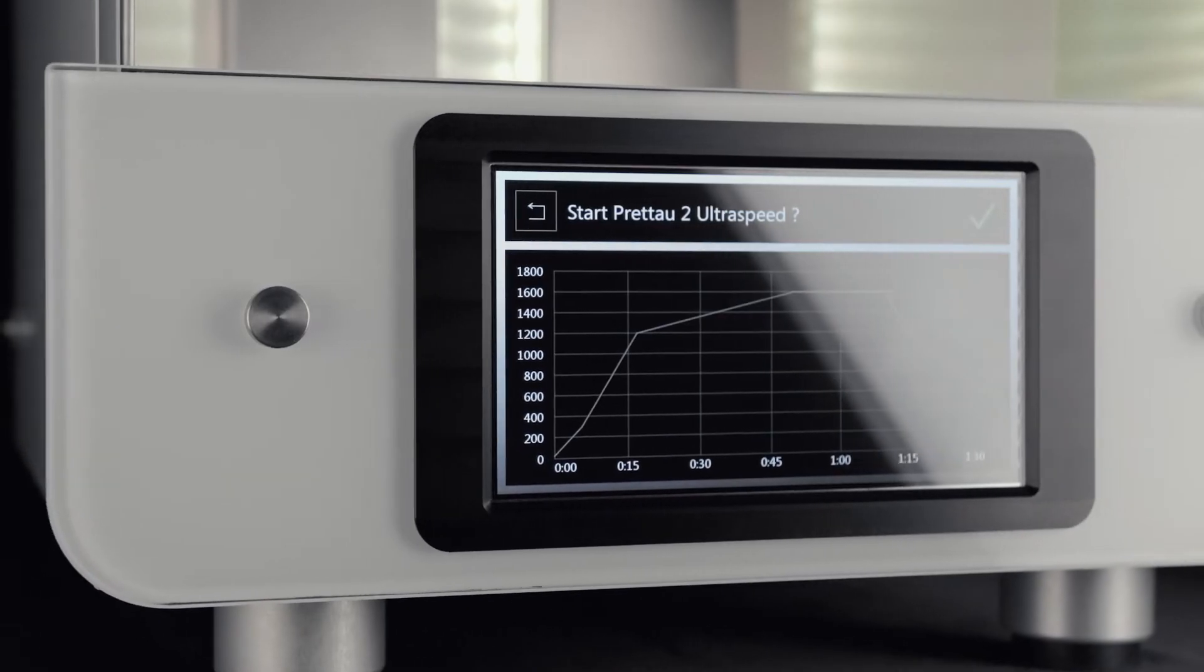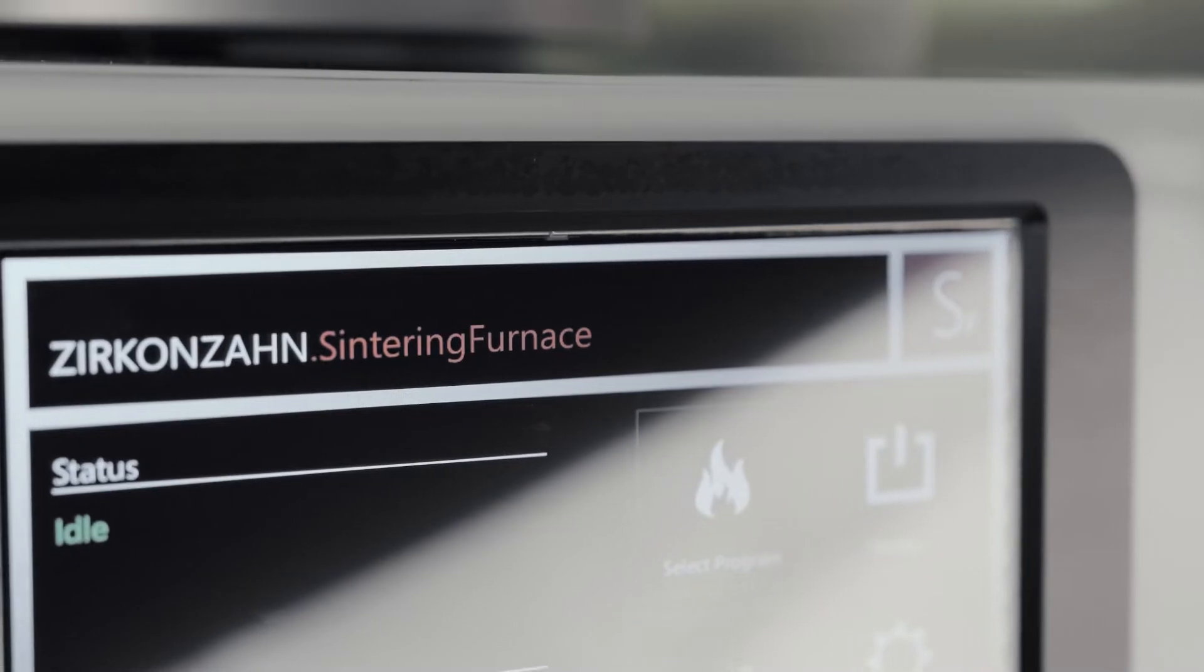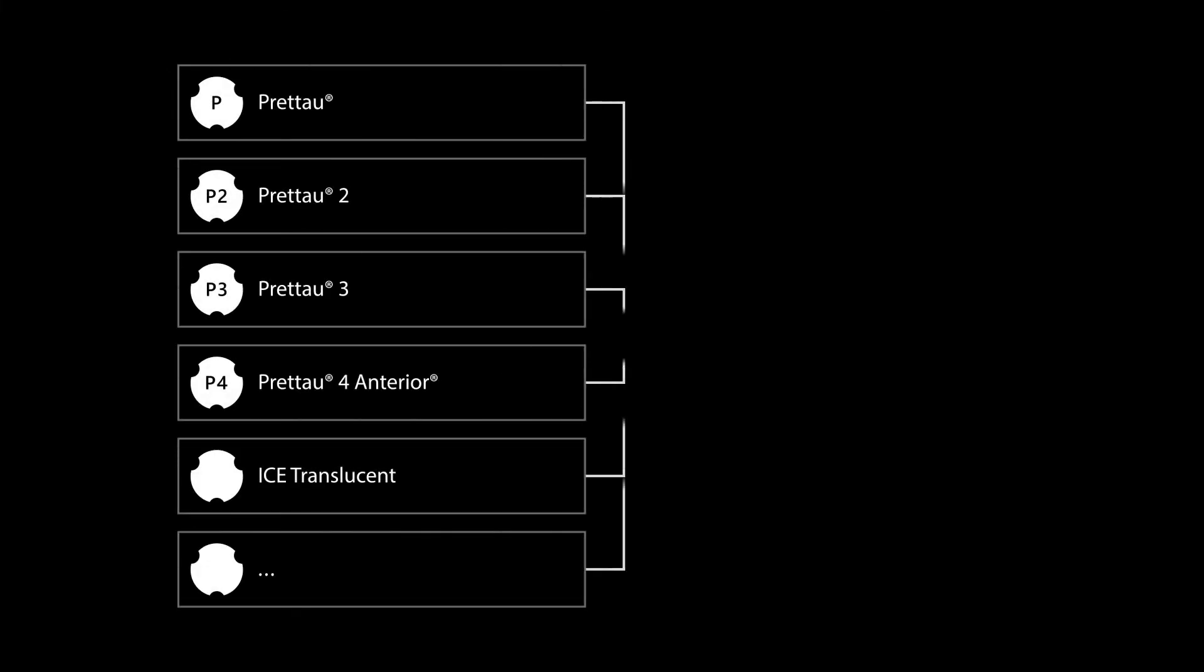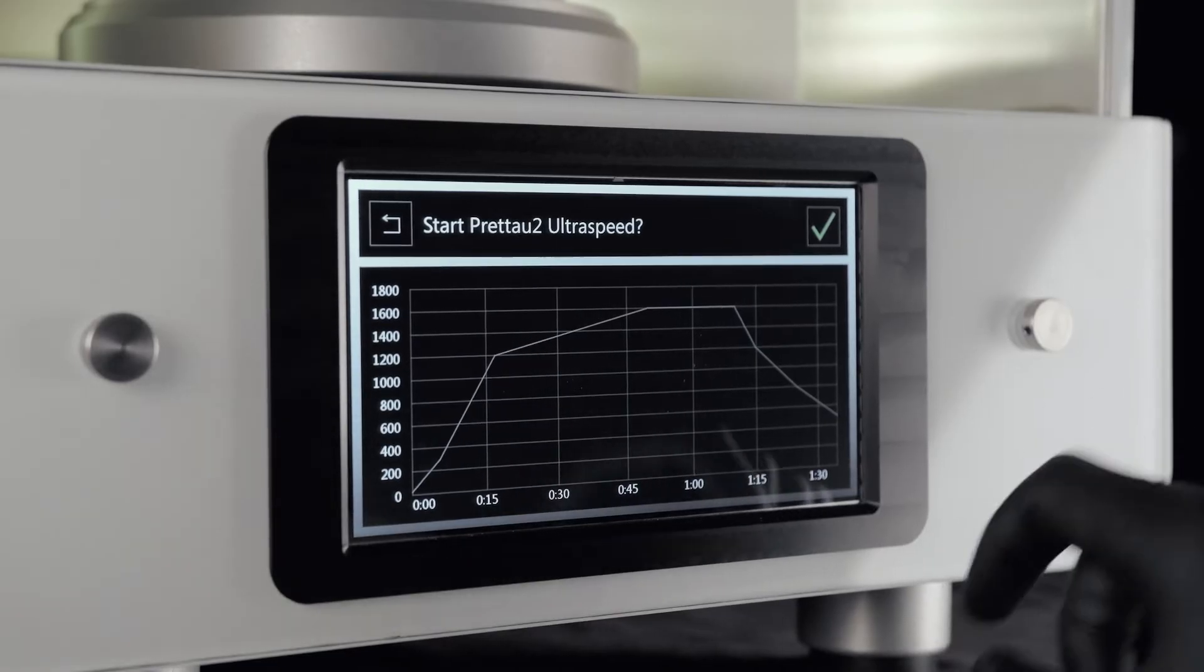Thanks to the 7-inch touch display, our Zirkonzahn Turbo is extremely easy and intuitive to use. The newly developed and redesigned software allows you to select both the desired material and program speed, and finally to start the sintering program.